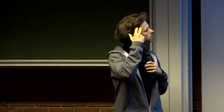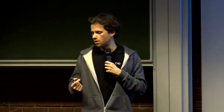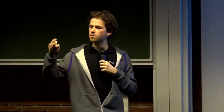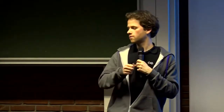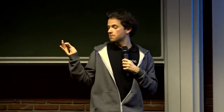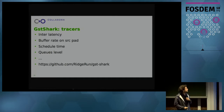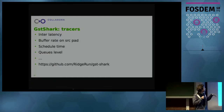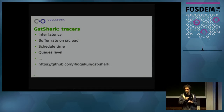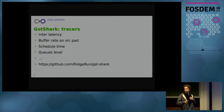GST Shark can also be used to measure performance on the pipeline, which I find quite useful. For example, it can give you at what rate buffers are arriving on each pad in the pipeline. So if you have a pipeline which is not going as fast as it should — you are expecting 60 FPS on your screen but you are just getting 20 — this may help you find which element is operating slower. You can do a lot of different things like schedule time, which is the last time since a buffer has been received on an element. You can use it to track queues as well.